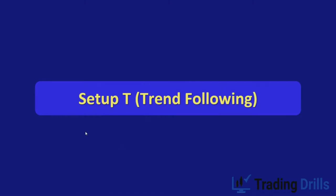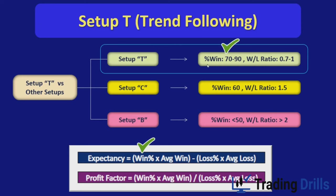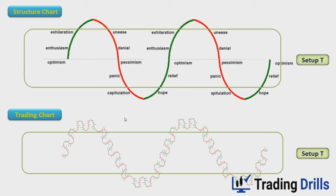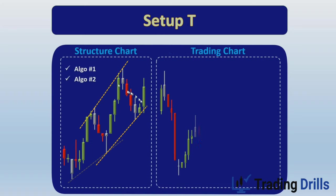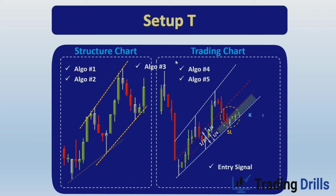Setup T stands for trend following. The edge from this setup comes from its high win rate with a moderate win-to-loss ratio. To catch these setups, we go to the structural chart and find the core of the trend in the center of the price swing. The structural chart, which is three to ten times higher timeframe than the trading chart, should show a clear uptrend or downtrend, and the trading chart should also show a clear uptrend channel aligned with the structural chart's trend, with good momentum.